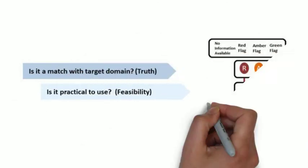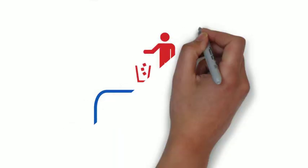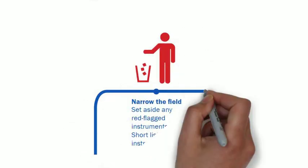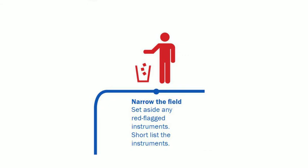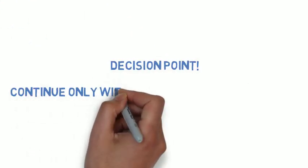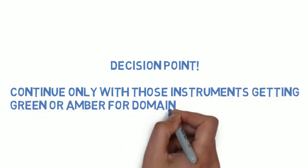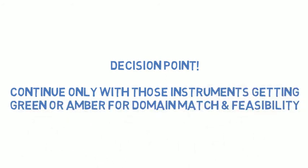The OMRACT working group will review the results of the input it has received on domain match and feasibility, and make a decision about whether it makes sense to continue to evaluate this instrument, or to set this instrument aside if red flags or issues have been raised about its domain match and or feasibility. If either of the first two questions are answered as red, then the instrument will be set aside and will not be further assessed. If domain match and feasibility are assessed as green or amber, the instrument will proceed to the next part of the algorithm.